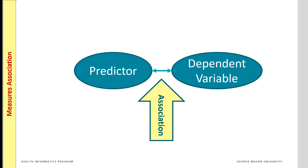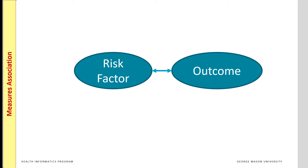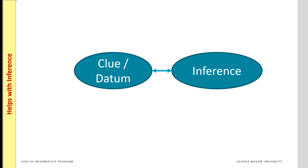The likelihood ratio measures the association between each predictor and the dependent variable. Note that likelihood ratio is simply a measure of association, even though conceptually we often think of the predictor occurring before the dependent variable. Likelihood can be used to measure the relationship between risk factor and outcome, and it can be used to measure the role of a datum or clue in the inference task.